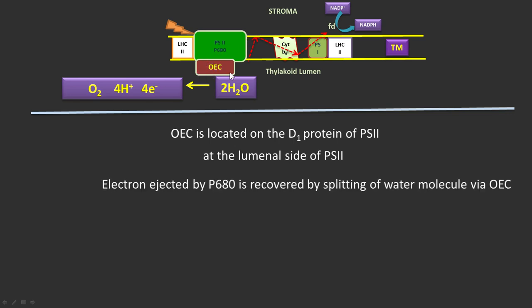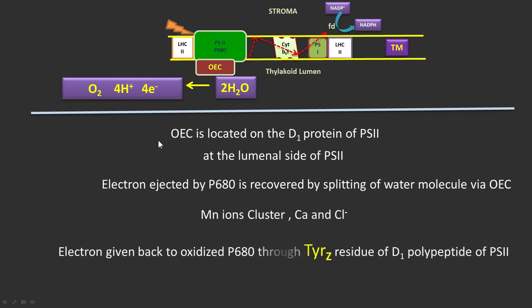This complex photolyzes water into electrons and these electrons are given to oxidized P680. This complex is rich in manganese, chlorine ion, and calcium ion.